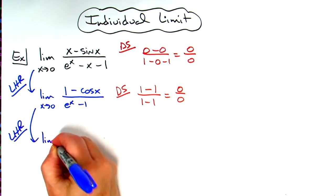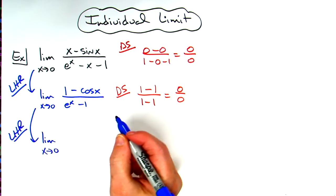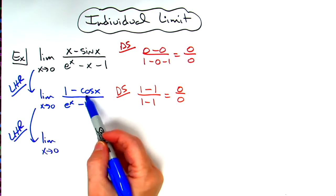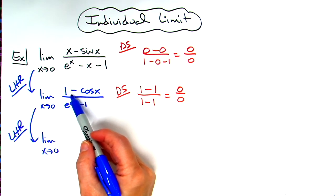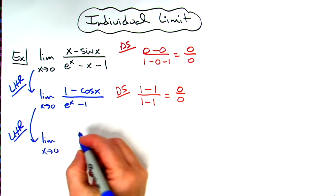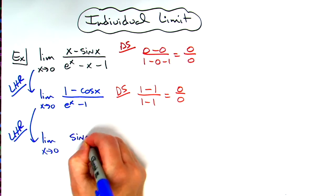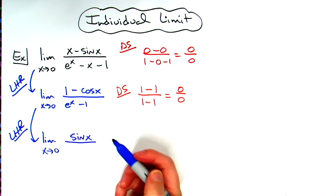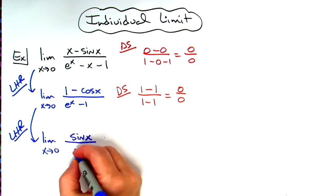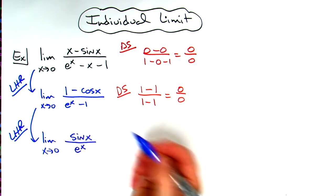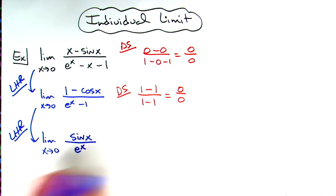I'm going to have the limit as x approaches zero. Taking the derivative: the one goes away. Derivative of negative cosine x is positive sine x because of the negative that's already there. Derivative of e to the x is e to the x. The derivative of one goes away. Now I'm down to sine x over e^x.